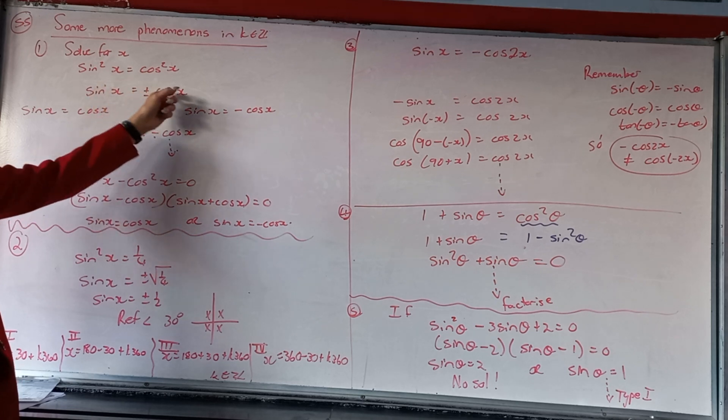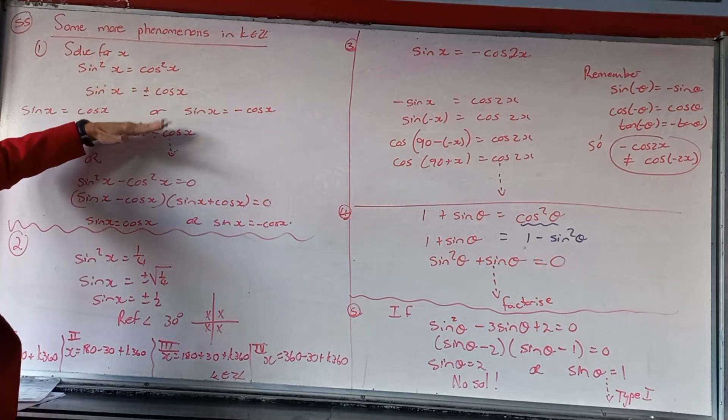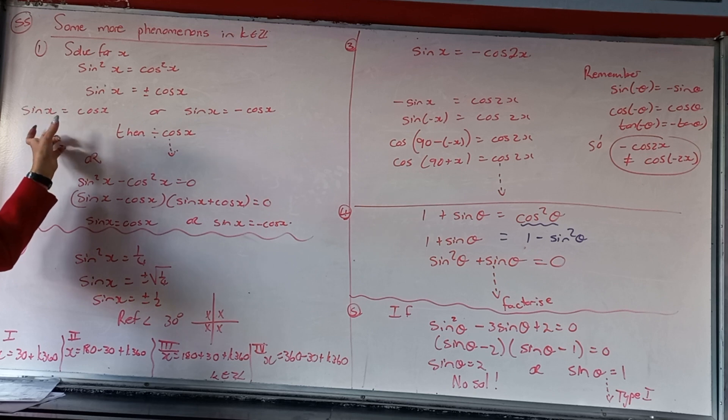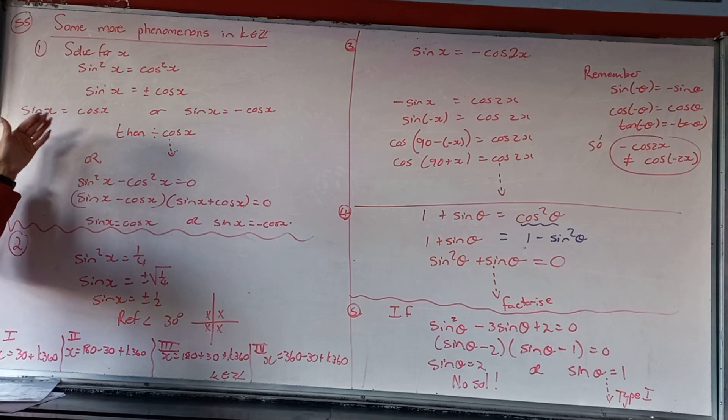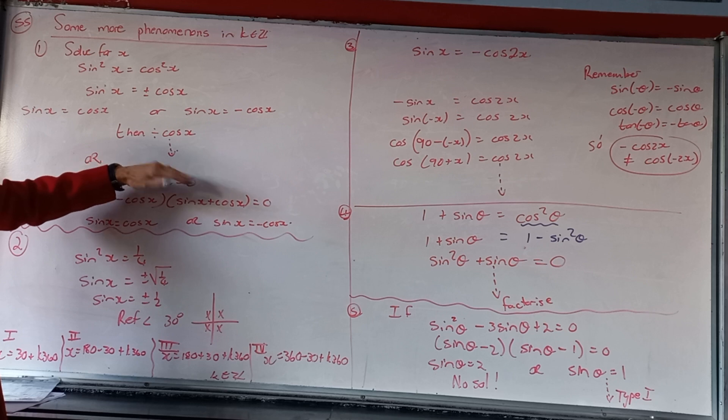Sin equal to cos and sin equal to negative cos. Then we've got our type, the angles are the same, sin and cos, but angles are the same, so we divide by cos and we get back to tan. So that's how your problem will continue.